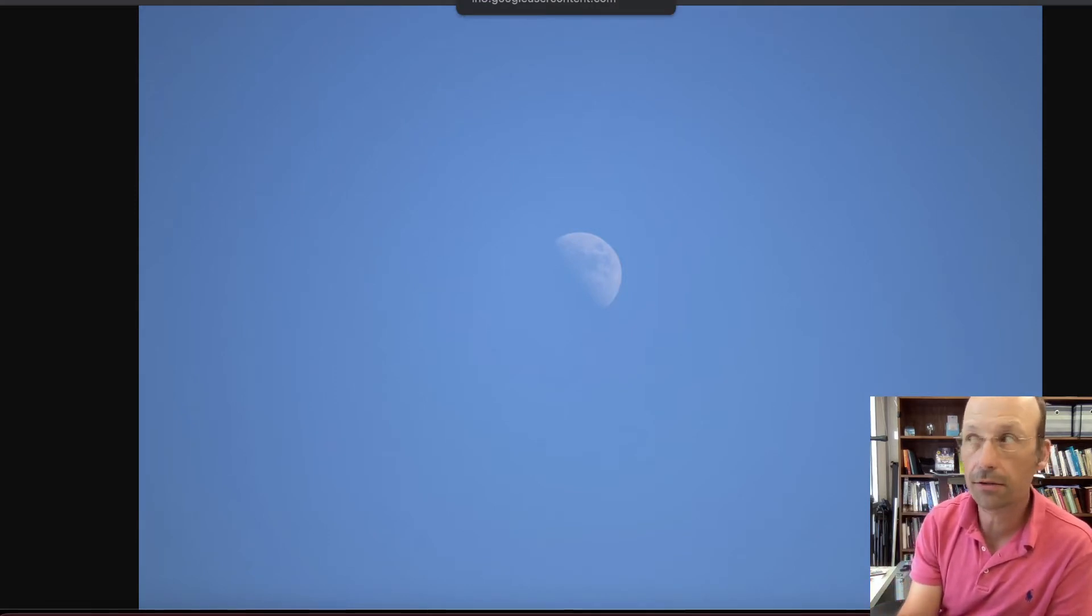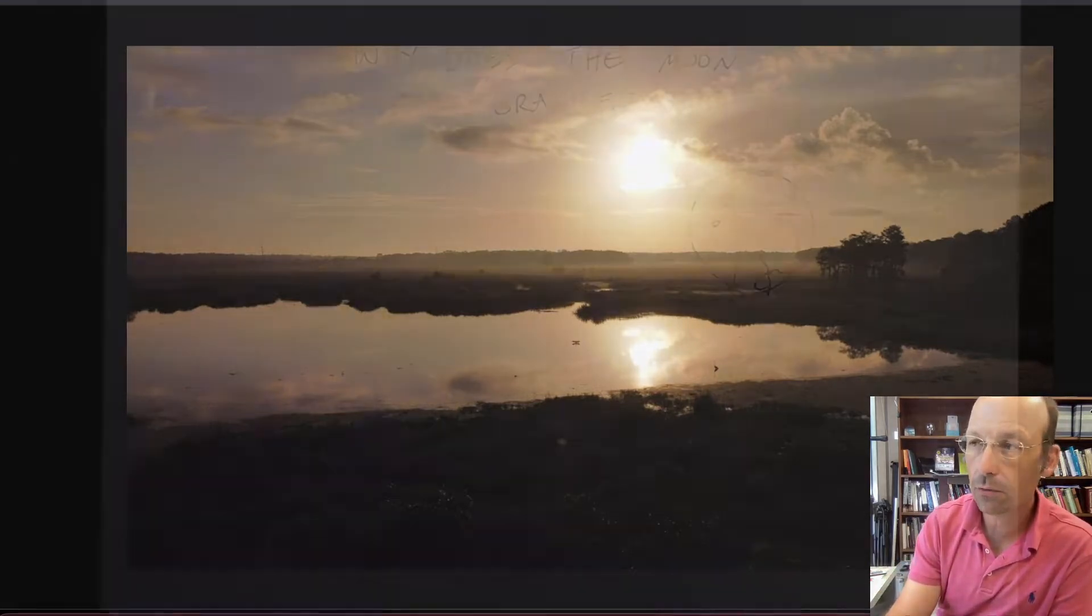And then finally, if you looked at the sun - which you should never look at the sun - but if you did and the sun's close to the horizon, it also looks more reddish or orange. I took this picture in the swamps in Louisiana. We like that picture. Okay, so let's talk about why this works.